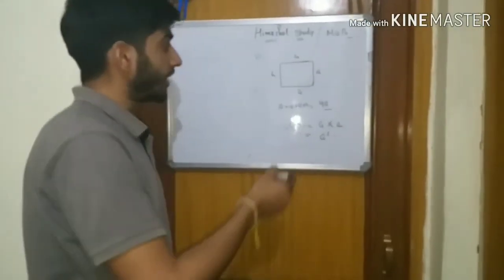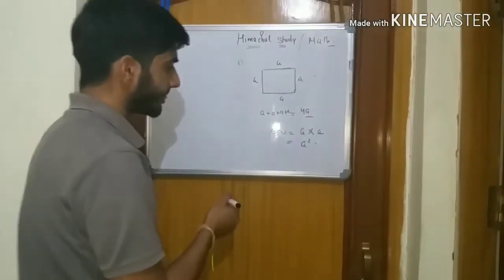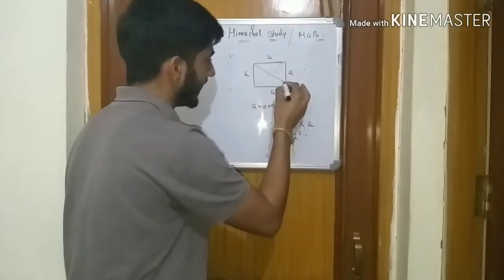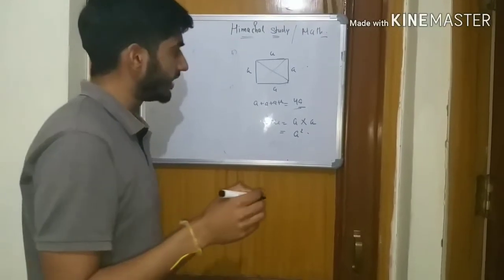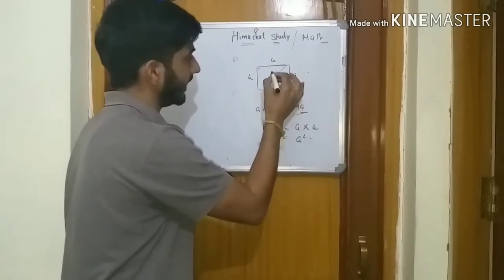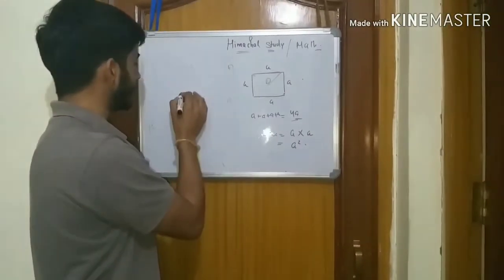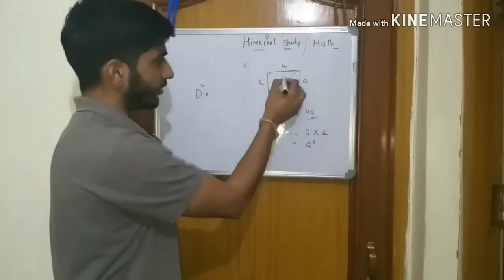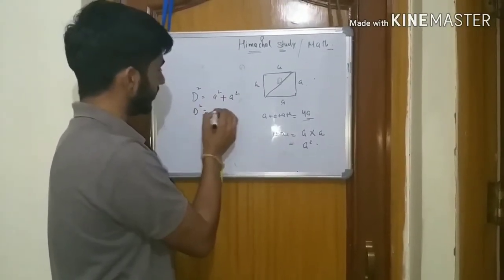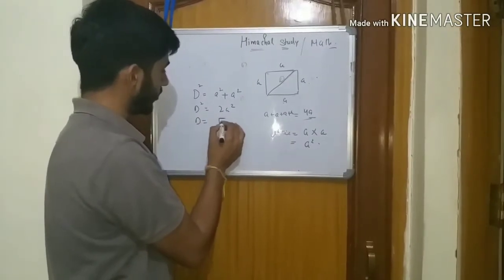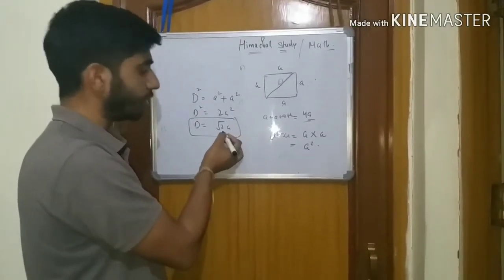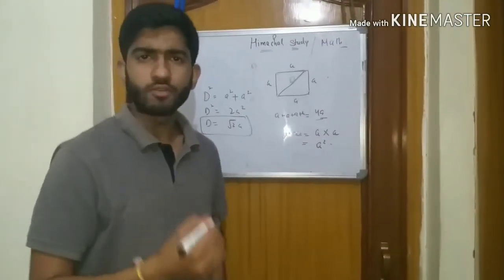If you have a diagonal in a square, using the Pythagorean theorem: d squared equals a squared plus a squared, so d squared equals 2a squared, and d equals the square root of 2 times a. So the diagonal of a square with side a is a root 2. You don't need to memorize this — you can see how it comes out.